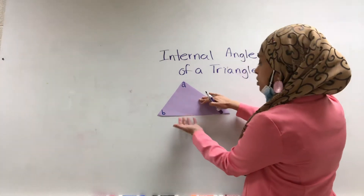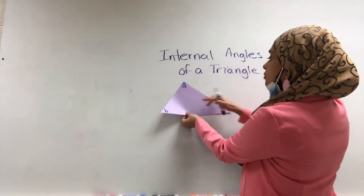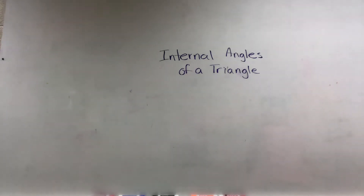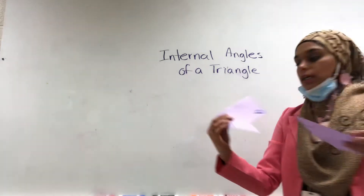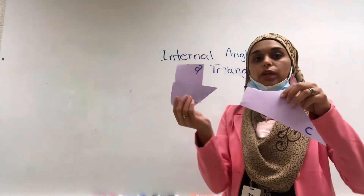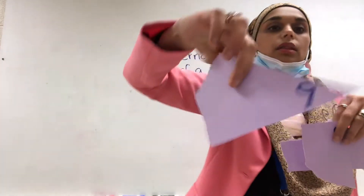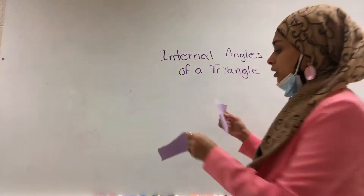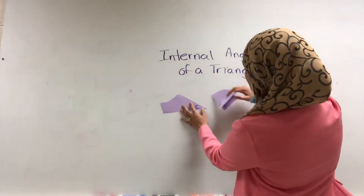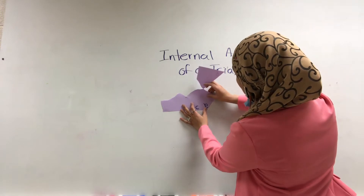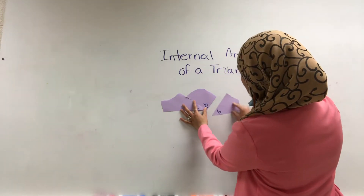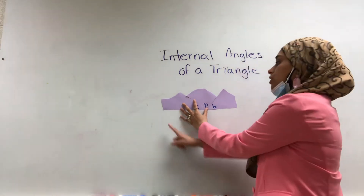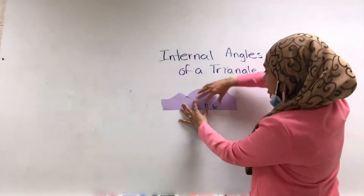I'm going to take this triangle and rip it into three pieces. After I rip it into three pieces, I'm going to show you something interesting. Here is that same triangle, I've torn it up — there is my A, there is my B, and there is my C. Now if I take these three and put them back together in a different way, just like a puzzle piece, I end up with an angle that you're aware of.